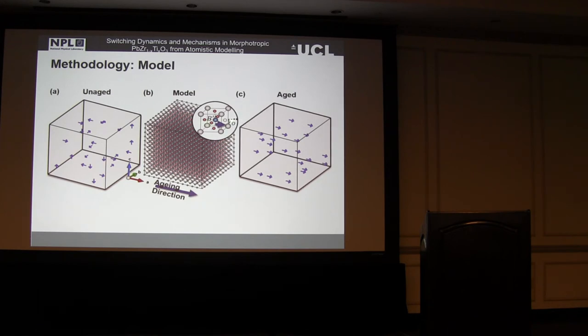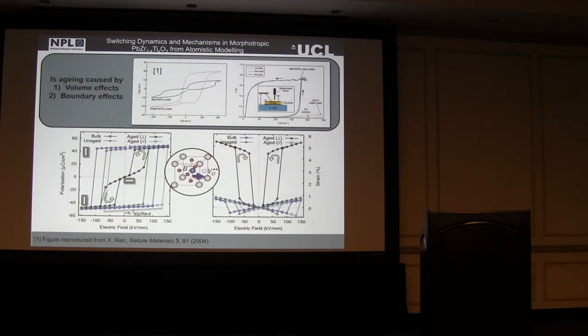In our model, what we do is we introduce these doping defect associates which creates these defect dipoles. We can model the system either with no defects at all, we can set up in an unaged condition where they're all randomly orientated, or we can set up in an aged condition where we orient our defect dipoles pointing in a certain direction based on the poling axis. One of the large contentions at the moment is whether aging is caused by a volume effect by these defect dipoles in the volume of the domain, or whether it's a boundary effect by the migration to the domain wall causing pinning, or interactions with interfaces such as electrodes or grain boundaries. One of the advantages about our model is we can do it bulk, we can get rid of all interfaces entirely. We've got no electrodes, no domain walls, no grain boundaries. So we can model purely the volumetric effects and see if we've reproduced all the artifacts of aging. And the answer is, yes we do.